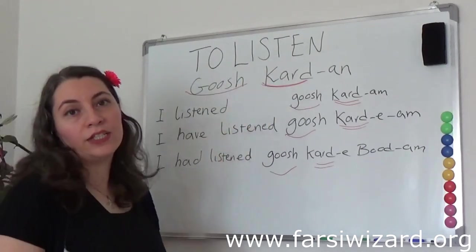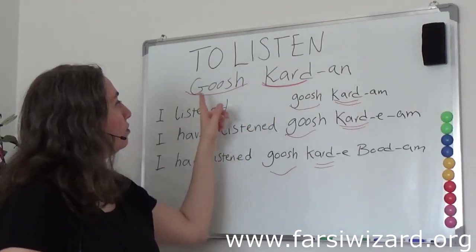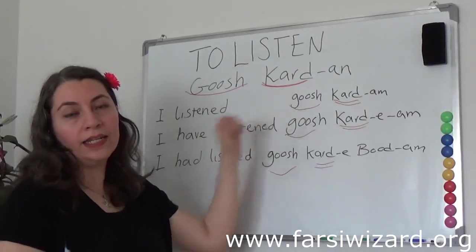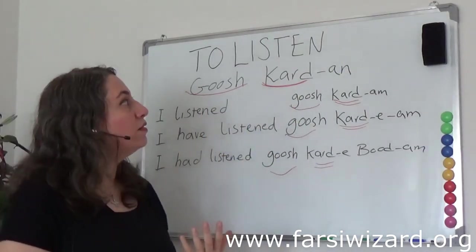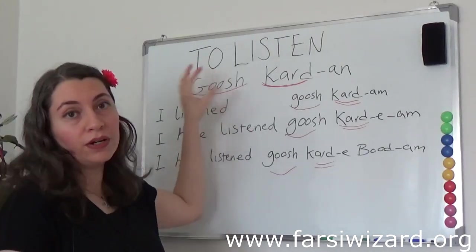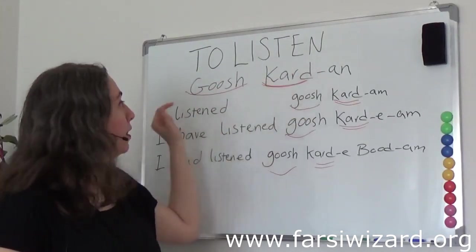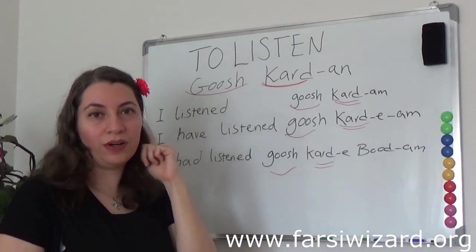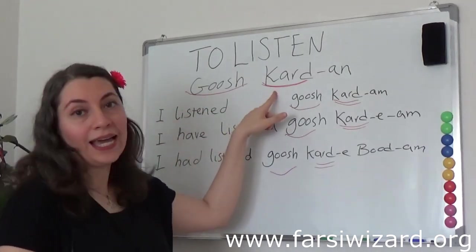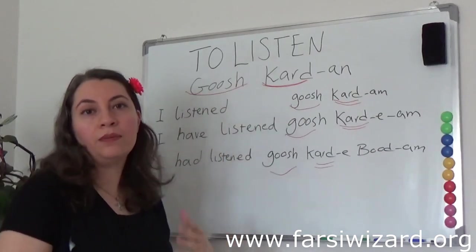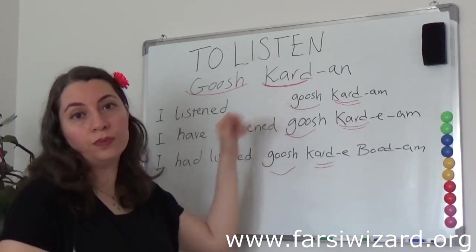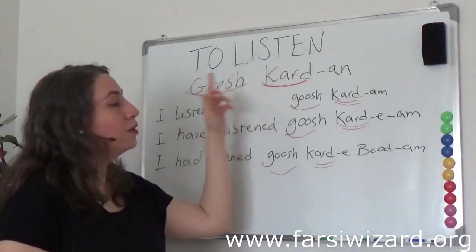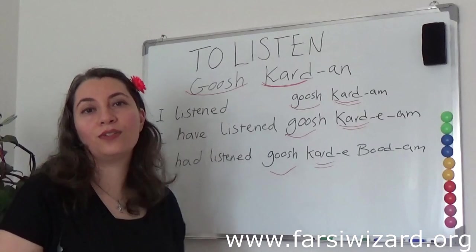Let's think of a simple verb like 'to listen.' In Farsi, to listen is gush kardan. A compound verb is composed of a noun part and a verb part. The noun part here, gush, simply means ear — the body part, ear, is gush. Kardan, if you remember from many other videos, is 'to do.' So basically, the verb 'to listen' for us is 'to do ear.' This is how we say to listen.